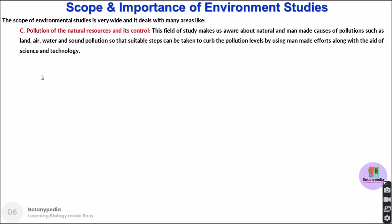Another domain of environmental studies deals with pollution of natural resources and the strategies that can be employed to control it. This field makes us aware of both natural and man-made causes of pollution, such as land pollution, air pollution, water pollution, and sound pollution. Pollution is not only caused by humans — natural causes include wildfires and volcanic eruptions. There are industries, scientists, and departments that deal with strategies to curb pollution-related issues, and this is where science and technology plays a key role.